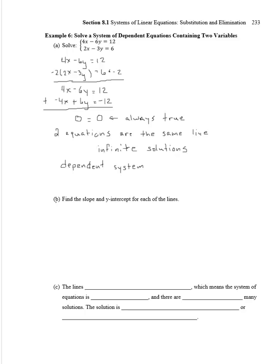So this is what we call a dependent system. So if we change these two equations into slope-intercept form, 4x minus 6y equals 12. So negative 6y equals negative 4x plus 12. Divide both sides by negative 6, we get y equals 2 thirds x minus 2.